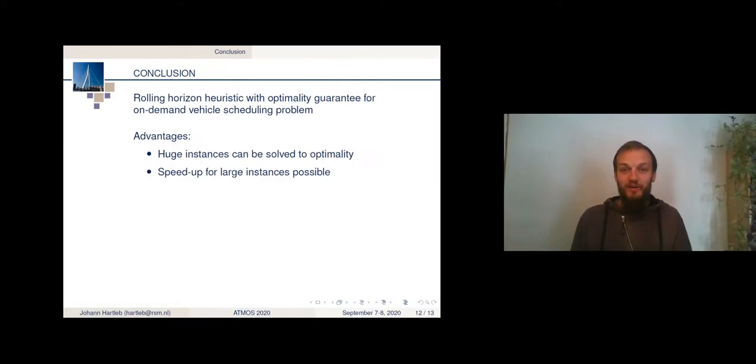Okay, let me conclude with this. We presented a rolling horizon heuristic, and we also developed an optimality guarantee for this. So we can solve this, in particular this on-demand vehicle scheduling problem, to optimality with this heuristic, which was not tractable beforehand. And the other advantage is also, we have a speed up for the large instances.